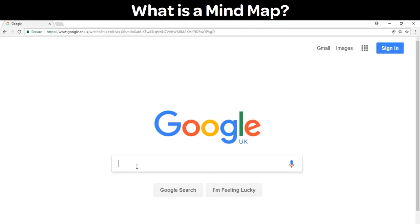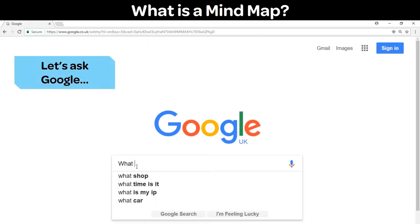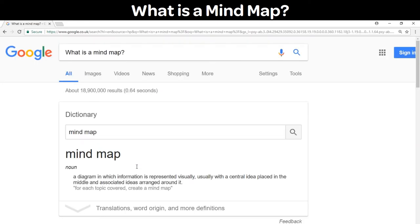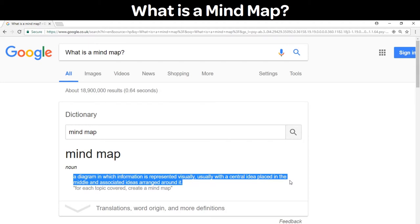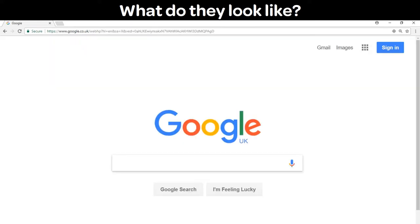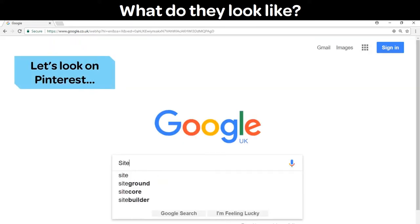If I didn't know what something was I would probably go ahead and ask Google, so let's do just that. Okay, so I found a dictionary definition of a mind map here and it tells me that it is a diagram in which information is represented visually, usually with the central idea placed in the middle and associated ideas arranged around it. That's all well and good, but in practice what does it actually look like?